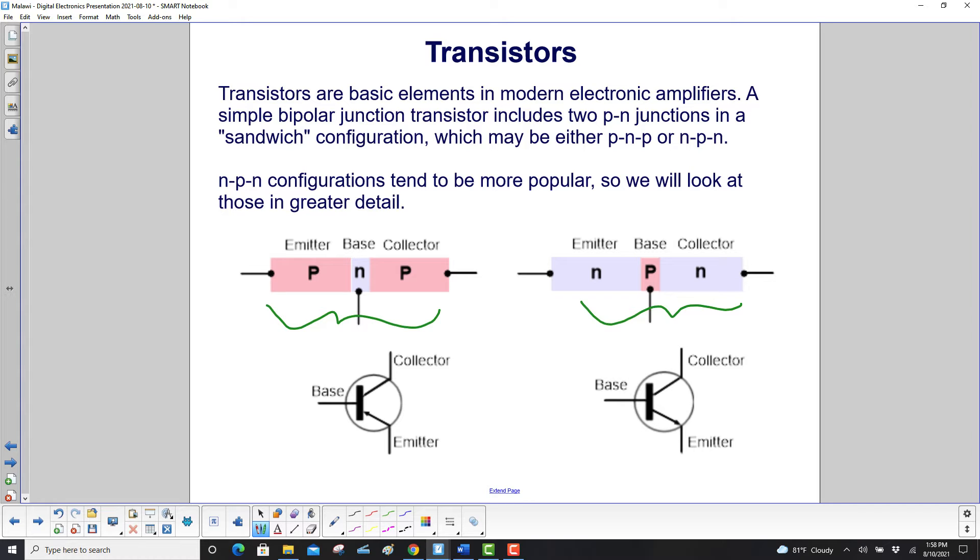These various pieces have names. Here P is the emitter, which is over here. The collector is the other P, right here, and the middle is the base. For NPNs, the base is in the middle, the P this time. The collector is over here, and the emitter is on this side. Notice we have three leads here, whereas diodes had two.